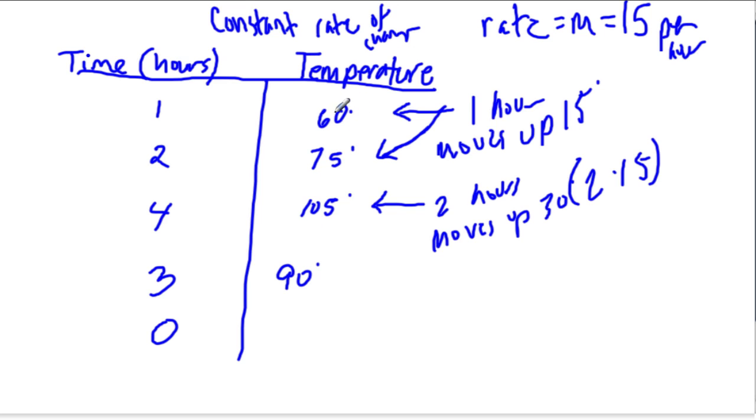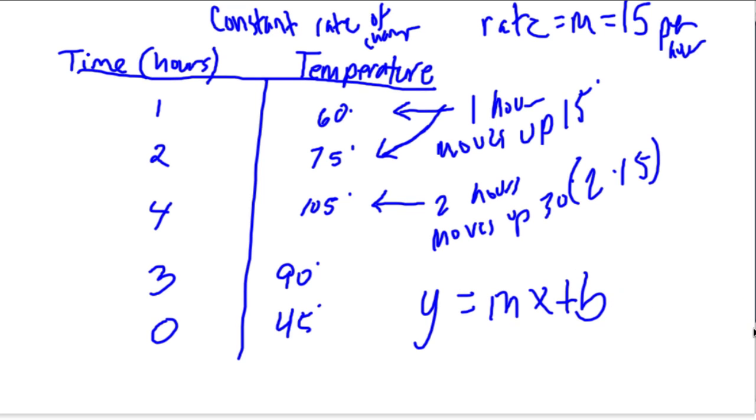So if that's true, then that means it was 15 degrees colder at zero degrees, which is 45. Now we have enough information to create an equation. Remember the format is y equals mx plus b. We don't need to use this format, but I find it helpful.